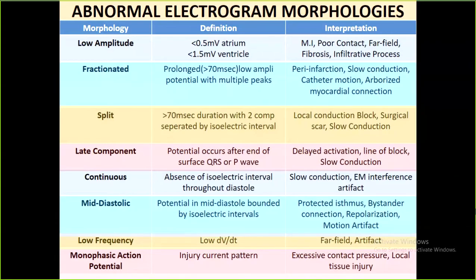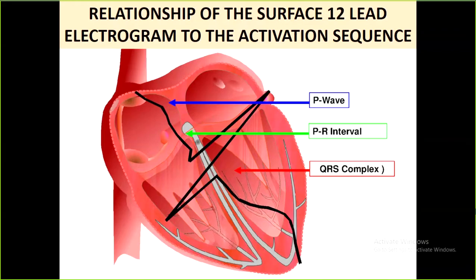Unipolar electrograms also give important information. An injury current pattern — ST elevation on the unipolar electrogram — means excessive contact pressure of the electrode on the tissue or local tissue injury. If you are poking the electrode on myocardial tissue and causing local contact pressure or local tissue injury, you will see ST elevation on the unipolar electrogram. Correlating with the surface ECG: the P-wave denotes atrial depolarization, the PR interval denotes conduction time from the AV node to the distal His-Purkinje system, and the QRS denotes simultaneous activation of both ventricles.